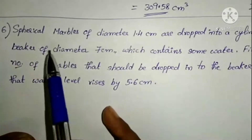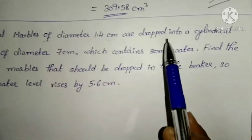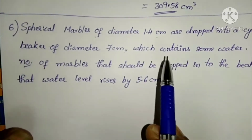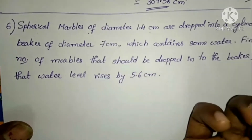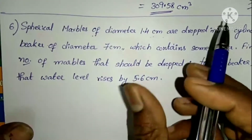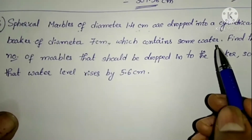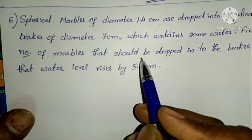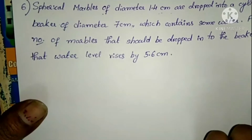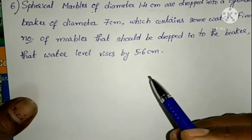Next, problem 6: Spherical marbles of diameter 1.4 cm are dropped into a cylindrical beaker of diameter 7 cm containing some water. Find the number of marbles that should be dropped into the beaker so that the water level rises by 5.6 cm.